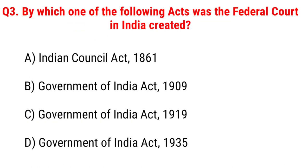Next question: by which one of the following acts was the Federal Court in India created? Option A, Indian Council Act 1861; B, Government of India Act 1909; C, Government of India Act 1919; D, Government of India Act 1935. The right answer is Option D, Government of India Act 1935.